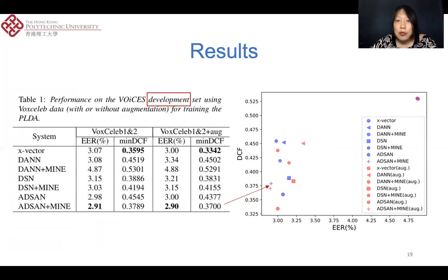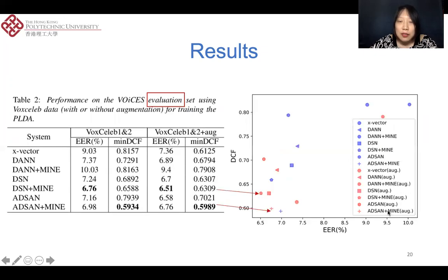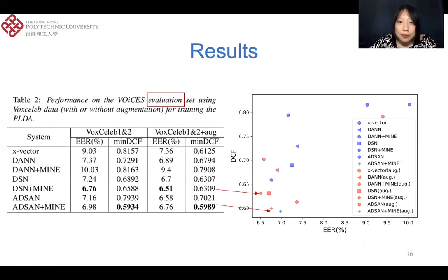For the development set, the performance can be improved slightly. Our goal is to achieve results in the lower-left corner, meaning lower EER and lower minimum DCF. We can only improve the EER slightly by using ADSAN with MINE. However, for the evaluation set, the performance is much better. The lowest EER is obtained by using the domain separation network with MINE, and the lowest minimum DCF is obtained by using our proposed ADSAN with MINE. The better performance on the evaluation set may be because the domain mismatch between VoxCeleb and the Voices evaluation set is more severe.